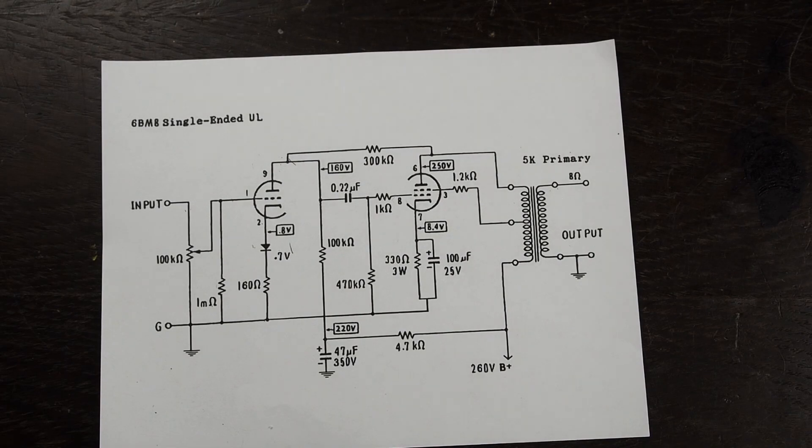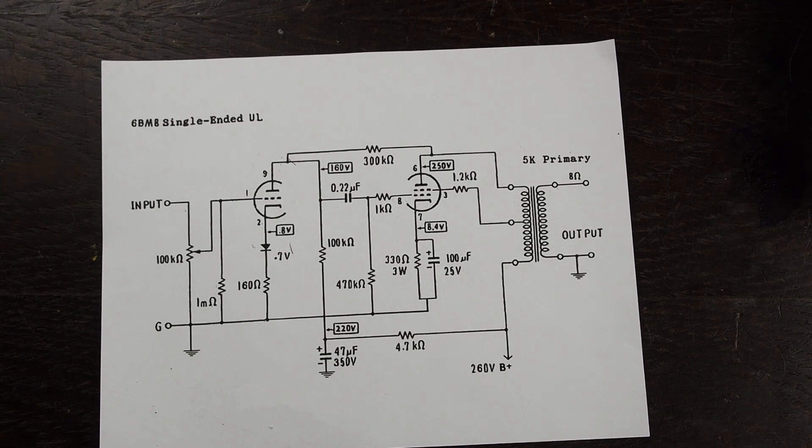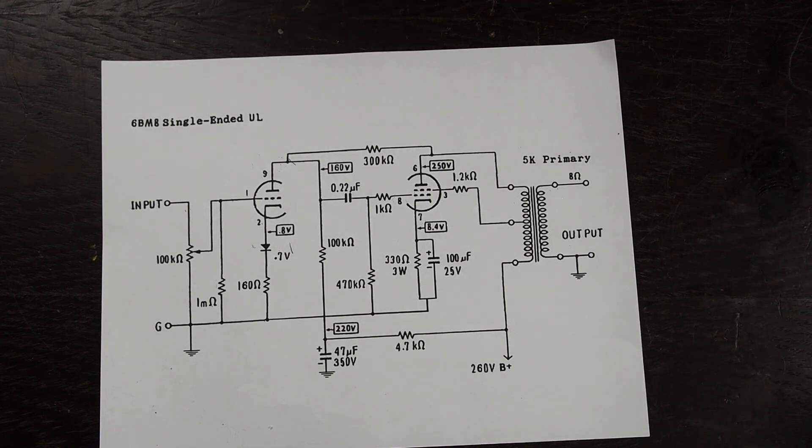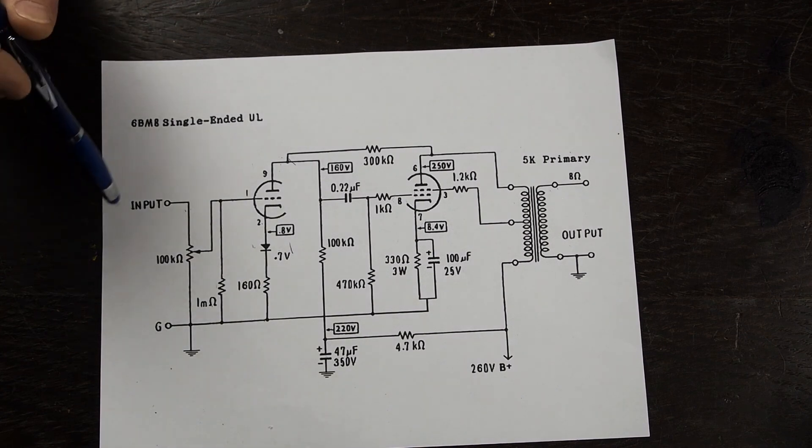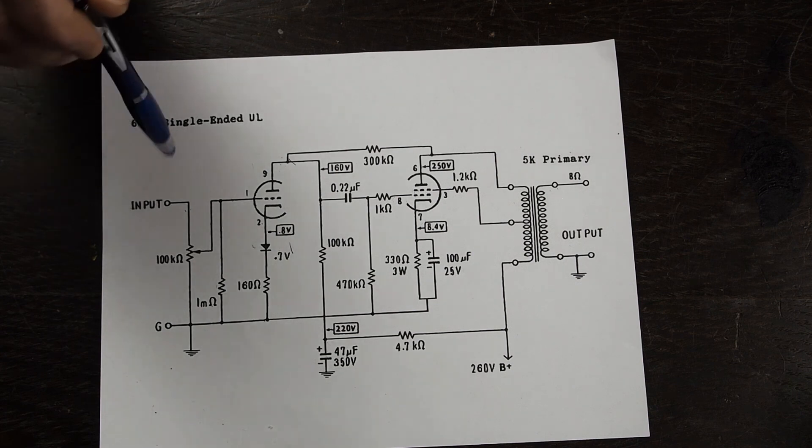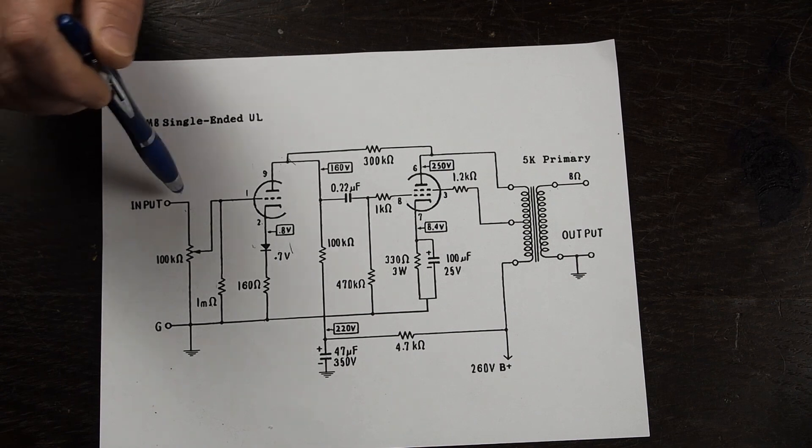Now we're going to go to the amplifier schematic itself. This is a version that I drew myself but I was inspired from Walton Audio's piccolo amp that uses a PCL-86 which is a similar tube but has a different filament voltage and we are again using a 6BM8. So we'll follow the signal through this amplifier to try to understand what everything is and why it's here.